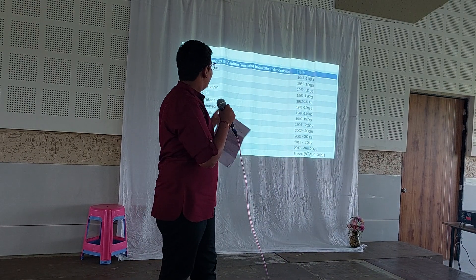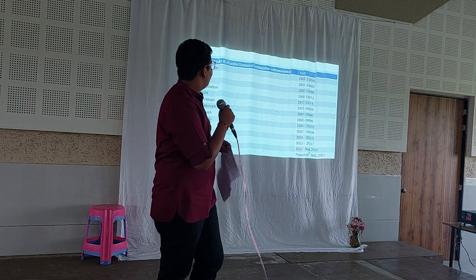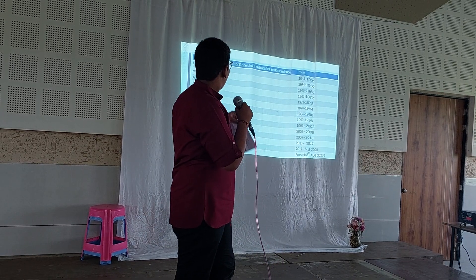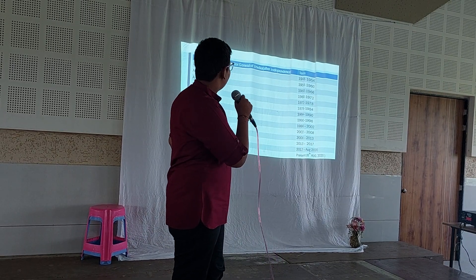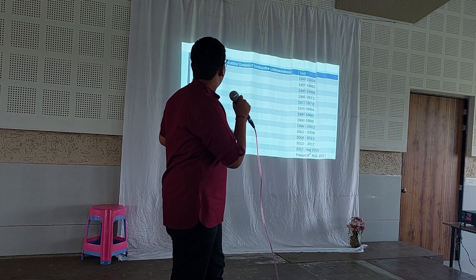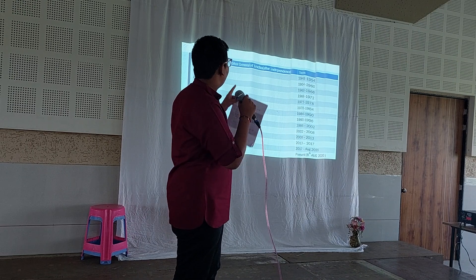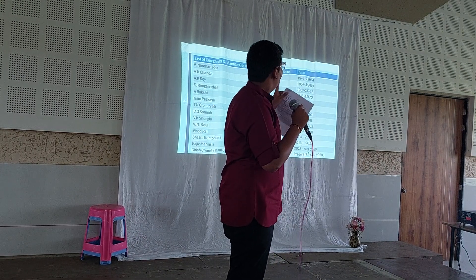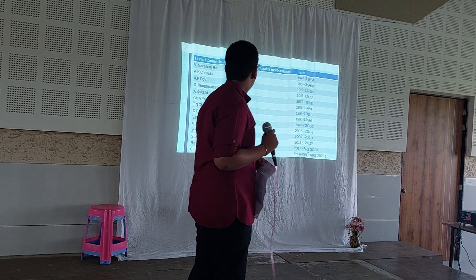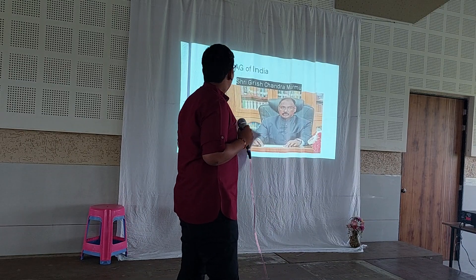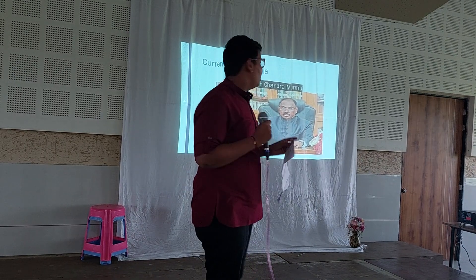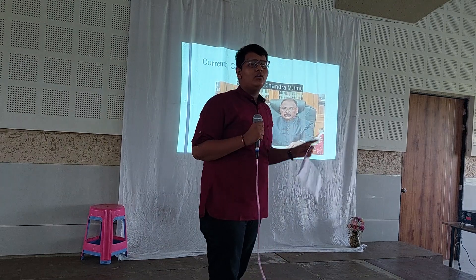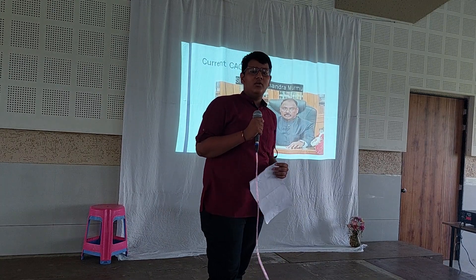These are the list of Comptrollers and Auditor Generals of India after independence. The first Comptroller and Auditor General of India was Vinahari Rao, whose term was 1948 to 1951. The current CAG of India is Bhirish Chandra Murmu, who was appointed on 8 August 2020.